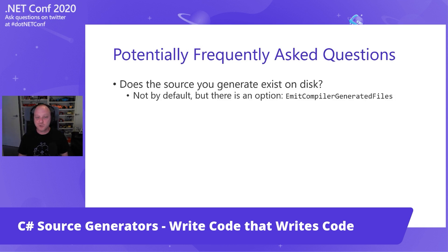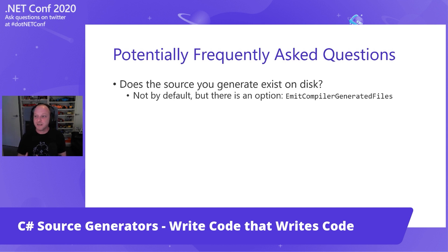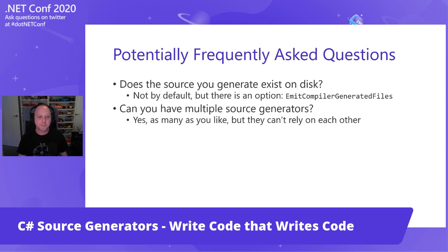Does the source you generate exist on disk? Not by default. You can do that — there is an option called 'emit compiler generated files'. This is the first gut feeling everyone has: I've written a source generator, it generates some source, let me see it. That option is there for you, but you shouldn't rely on it. I've written a few of these and I've never needed it — I'll show you in Visual Studio why you probably don't need it a bit later.